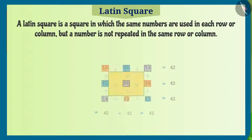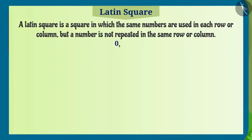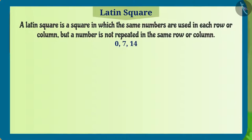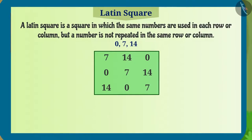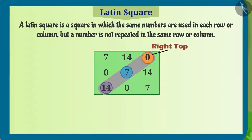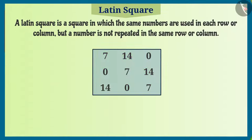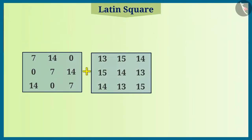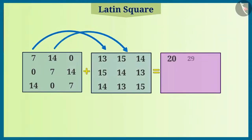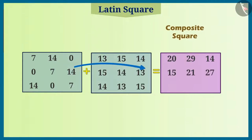Now I will make another Latin square by using 0, 7 and 14. In this square, the order of 0, 7 and 14 along the diagonal is from the right top to the left bottom. After this, I will add the cells of both these squares to get the composite square.